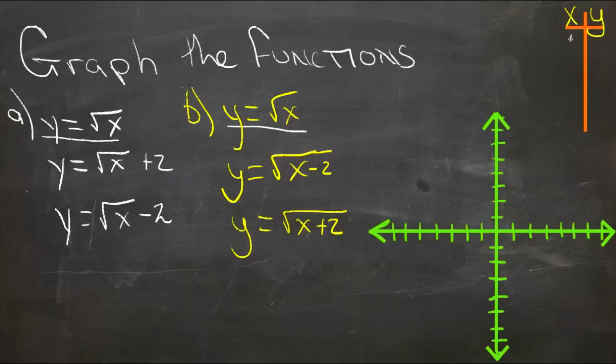We'll just put in some values for x. I'm going to choose all perfect squares so that I don't have to do any weird calculations. Square root of 1 is 1, square root of 4 is 2,